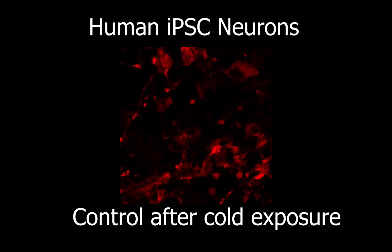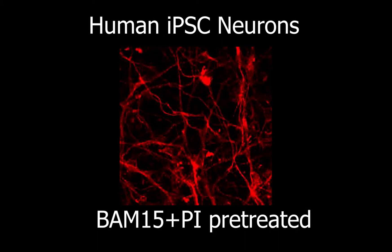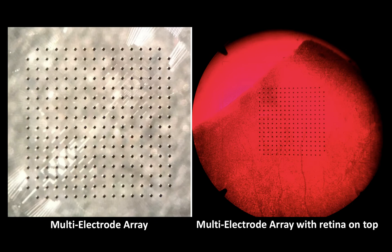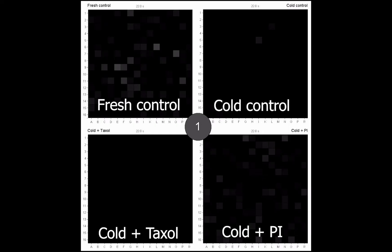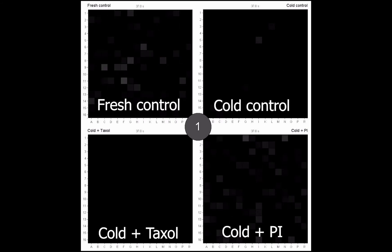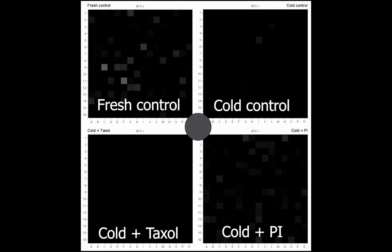We first tested these drug treatment strategies in human iPSC-derived neurons. Pre-treatment with BAM-15 and a protease inhibitor cocktail preserved the long neurites of human iPSC neurons. We then looked into retinal ganglion cells, or RGCs, from a rat's retina. RGCs in cold-incubated rat retinas that were pre-treated with the drugs displayed 7 to 11-fold increases in light responsiveness.